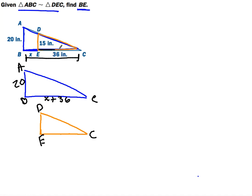This distance here is going to be 36, and this distance here is going to be 15. Now we can set up a proportion with 20 over 15, which equals X plus 36 over 36.